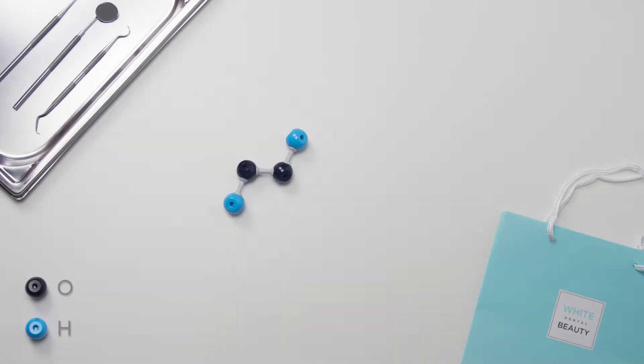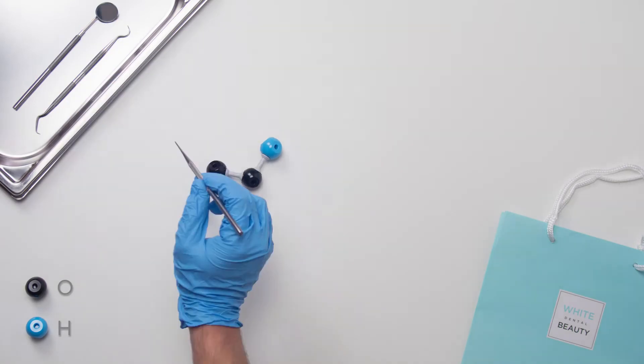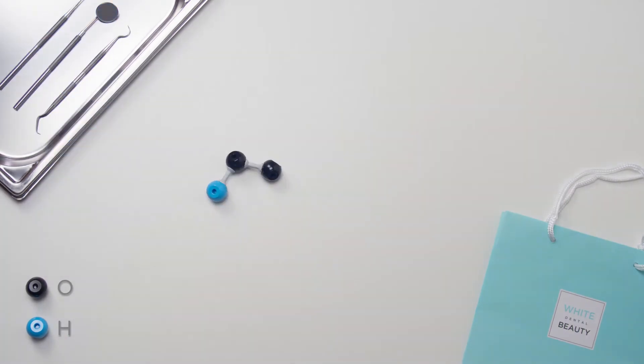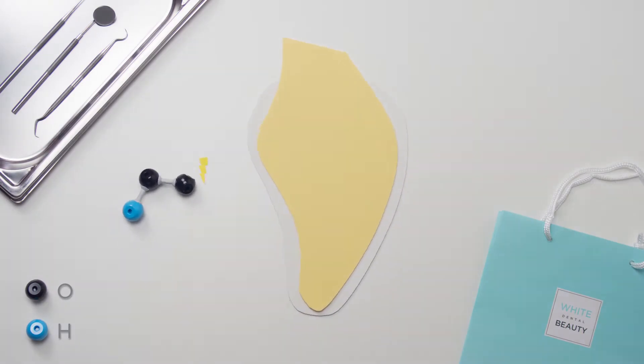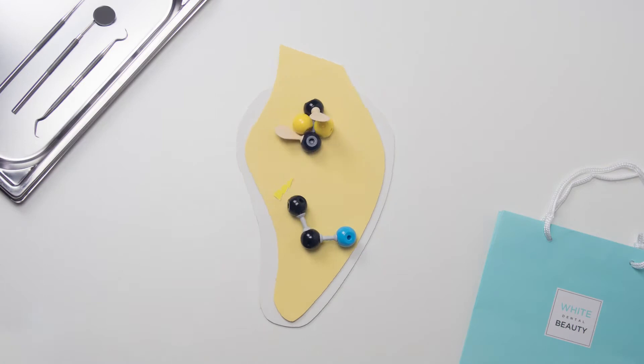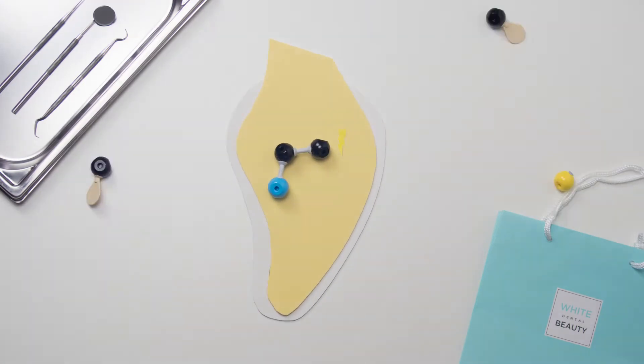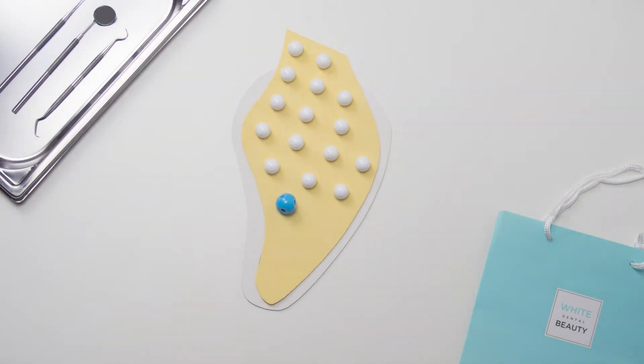All tooth whitening gels work in four simple steps. First, hydrogen peroxide breaks down into a perhydroxyl ion and a hydrogen ion. The perhydroxyl ion then passes through the enamel into the dentine before breaking down the large organic molecules which cause tooth staining, and this results in whiter teeth.